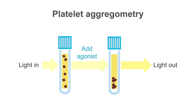Platelet aggregometry is another test for thrombocytopathia. It is the gold standard test; however, it takes long to perform and is not practical for the management of bleeding patients. In platelet aggregometry, light passes through a suspension of platelet-rich plasma. Various agonists are added to the test media, which results in the platelets clumping and settling to the bottom. This results in more light passing through the test media, which is measured on a graph.